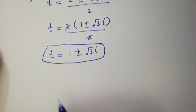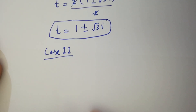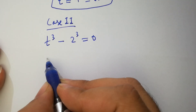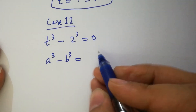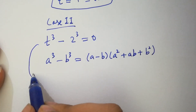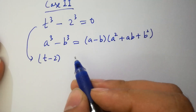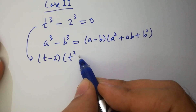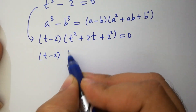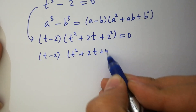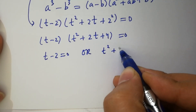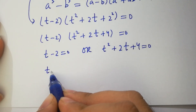Now moving to Case 2: t cubed minus 2 cubed equal to 0. As we know, a³ − b³ = (a − b)(a² + ab + b²). It will be (t − 2)(t² + 2t + 4) = 0. Either t − 2 = 0, giving t = 2, which is also a real solution, or t² + 2t + 4 = 0.